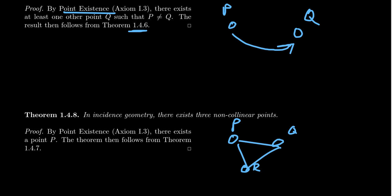This is our first major result for incidence geometries: in every incidence geometry, there exists a set of three non-collinear points. Three-point geometry is an incidence geometry, and the diagram of three non-collinear points is essentially three-point geometry itself. Three-point geometry is the smallest incidence geometry in existence — you have at least this structure, this triangle. Anything beyond this diagram cannot be a theorem of incidence geometry, because if it's not true for three-point geometry — which is an incidence geometry — it's not true for incidence geometries in general.